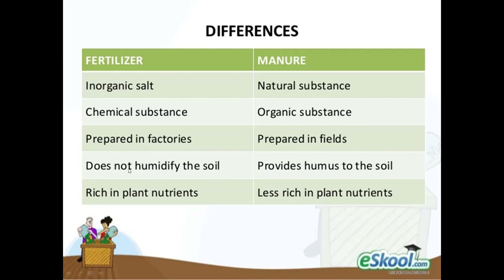Fertilizer does not humidify the soil, whereas manure provides humus to the soil. Fertilizer does not increase the moisture content in the soil, whereas manure increases the moisture retaining capacity of the soil. Fertilizers are rich in particular plant nutrients, whereas manure is less rich in nutrients but is not harmful and is very good for the health of plants, humans and animals.